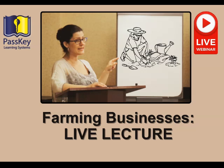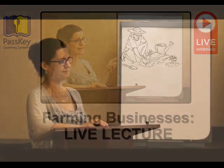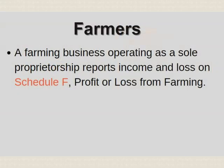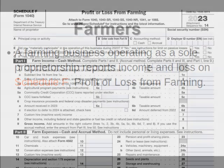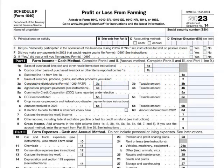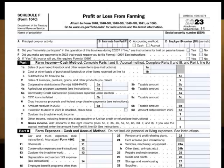In this video, we're going to be talking about farming businesses. Self-employed farmers report income on Schedule F. Self-employed farmers are considered just like regular sole proprietors, and they have a special schedule — Schedule F — instead of a Schedule C.